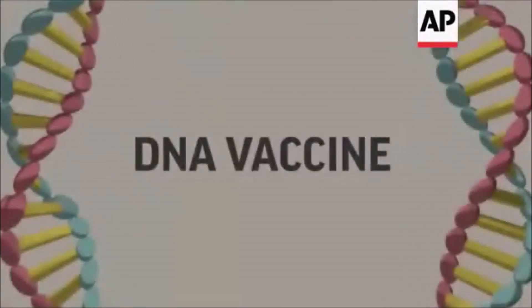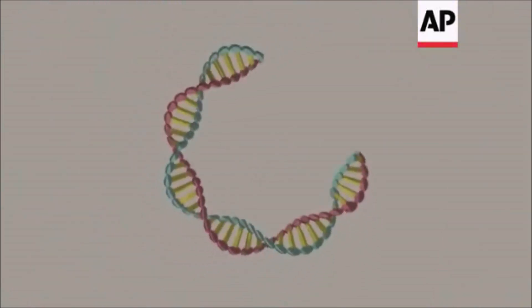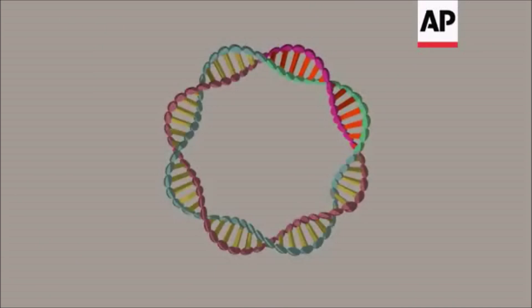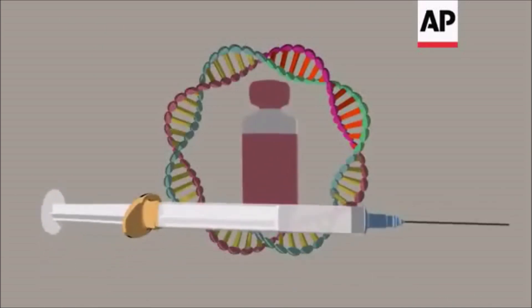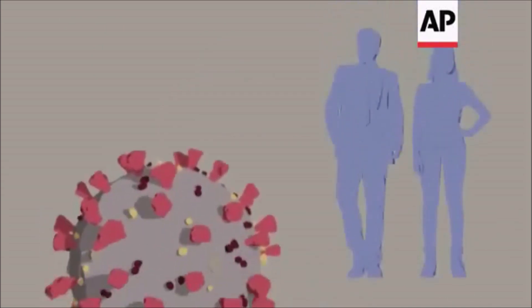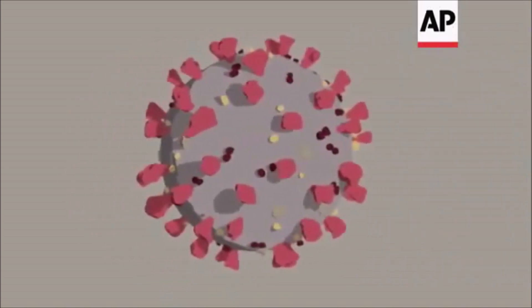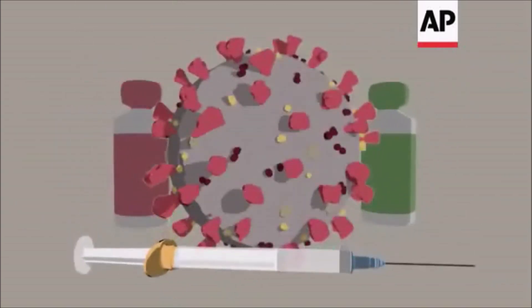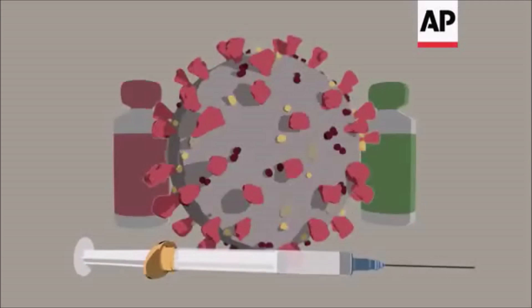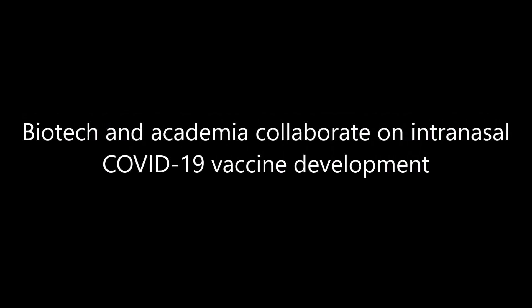Another method is called a DNA vaccine, where the genetic code for the spike protein is put into what's called a plasmid — a circular piece of synthetic DNA — and used as a vaccine. Both approaches prime the immune system to attack again if the real virus ever comes along. Whatever type of vaccine ultimately works, it will likely be 12 to 18 months before it's ready for widespread use. This brings us to biotech and academia collaborating on intranasal COVID-19 vaccine development.